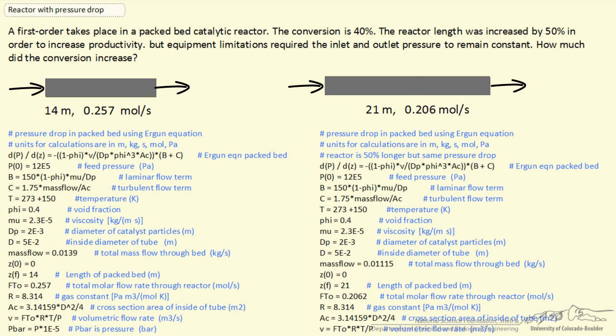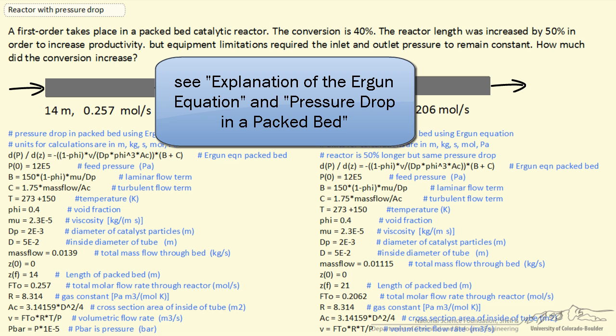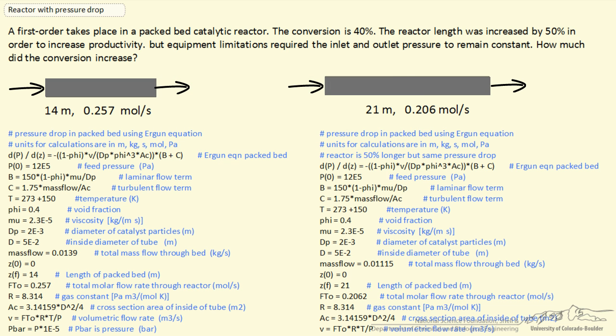So I'm going to solve it using POLYMATH. There are other screencasts that describe in more detail the equation for pressure drop in a packed bed reactor. We're using the Ergen equation, which is indicated here. This tells how the pressure drops as a function of distance through the reactor, and a number of variables that I won't go into detail here.